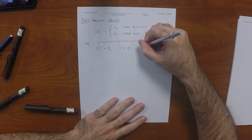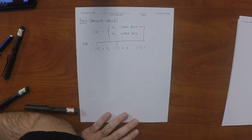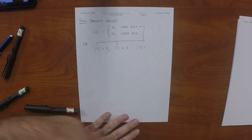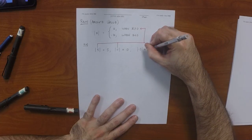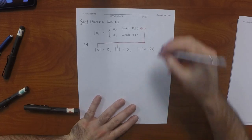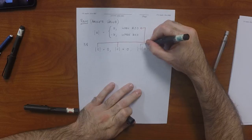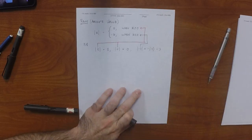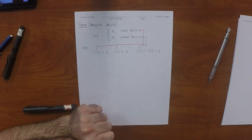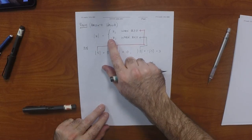What is the absolute value of negative three? Three. But according to the definition, why? Because X is negative, so we use the second case: it is negative X, and X is negative three, so it is negative negative three — which we call three. I'm not asking you to write 'negative negative three,' but I want you to see that's what the definition is saying.